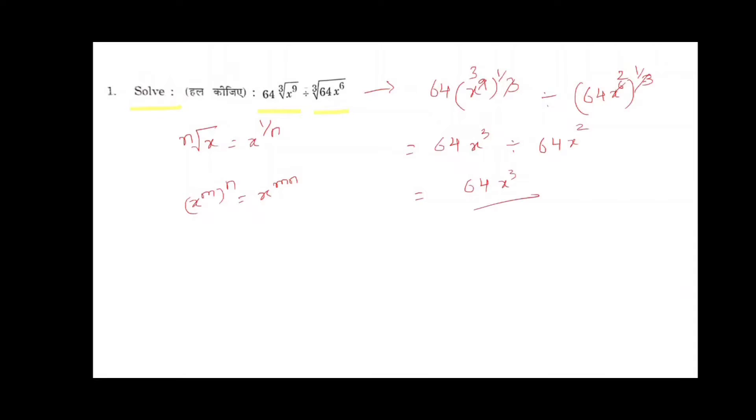Now 64x cube divided by 64x square. Here 64 and 64 will be cancelled, and out of 3x, 2x will be cancelled. So the answer is x.